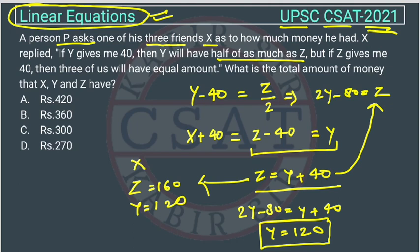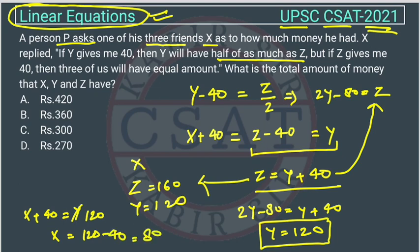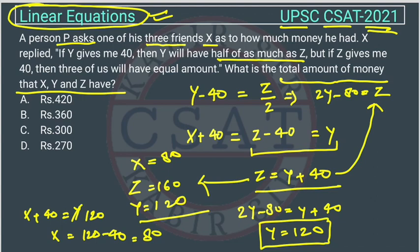Now we calculate x. From the condition, x plus 40 equals y, and y is 120, so x equals 120 minus 40, which gives x equals 80. The question asks for the total amount of money. The total is x plus y plus z, which equals 80 plus 120 plus 160, giving 360. So option B is the right answer.